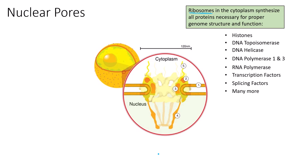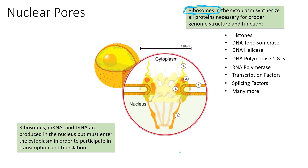There are a variety of proteins synthesized by these ribosomes in order to produce functions within the cell that allow us to efficiently operate. Ribosomes, mRNA, and tRNA are produced in the nucleus but must enter the cytoplasm in order to participate in transcription and translation — two processes that come together to ultimately produce protein synthesis, which is the biological reaction to produce proteins.